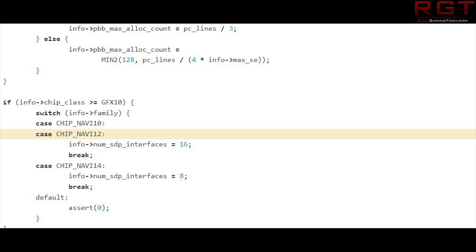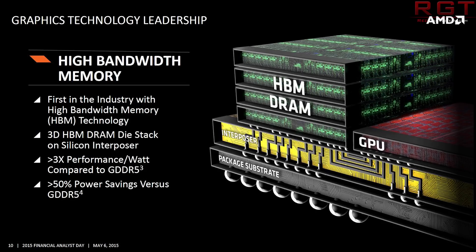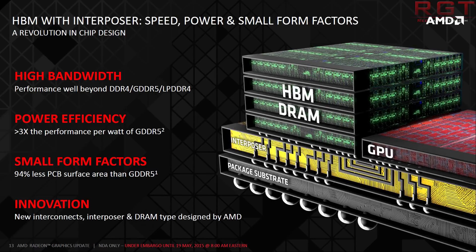SDP interface can also be a reference to high bandwidth memory 2 as well. But at the time, I didn't really believe that was a likely scenario, because the theory from all the leaks and rumors was that this card was for consumers. Therefore, high bandwidth memory 2 was just not really what you would expect on a consumer-level card — it would just increase the cost too much. Therefore, a GDDR6-based GPU, albeit with faster clocked memory, was the most likely scenario.